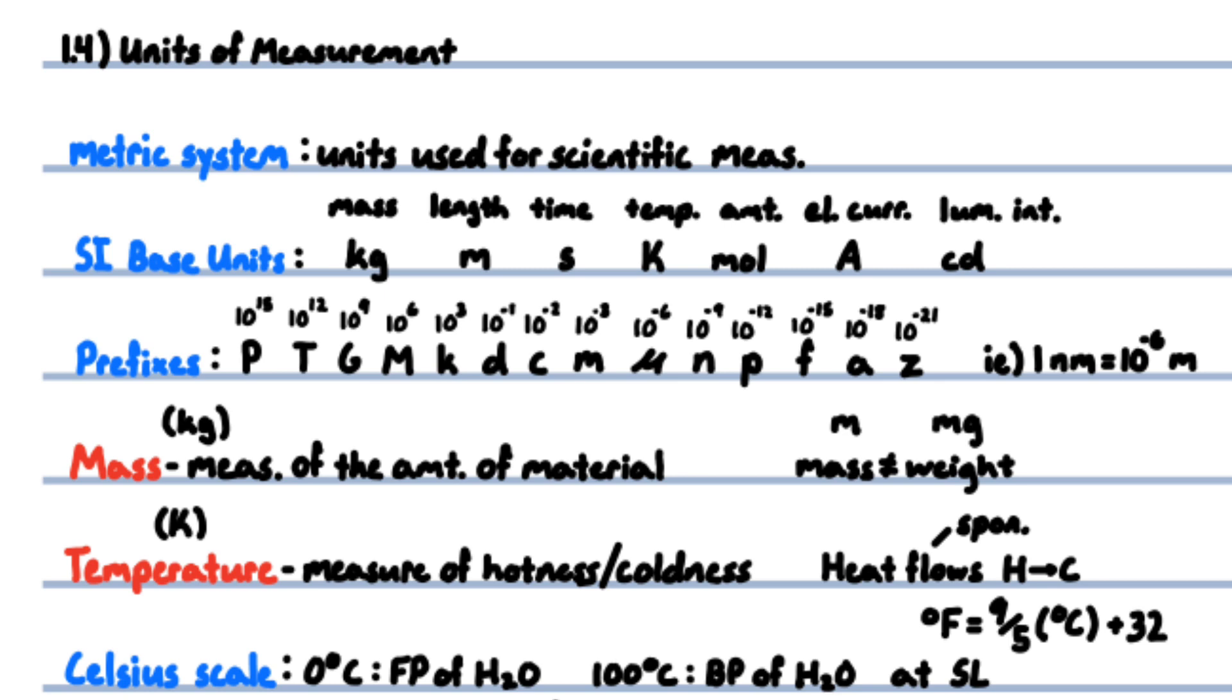Prefixes used in the metric system and with SI base units: peta meaning 10 to the 15 power, tera meaning 10 to the 12, giga 10 to the 9, mega 6, kilo 3, deca 1, deci negative 1, centi negative 2, milli negative 3, micro negative 6, nano negative 9, pico negative 12, femto negative 15, atto negative 18, zepto negative 21. For example, one nanometer equals 10 to the negative 9 meters.